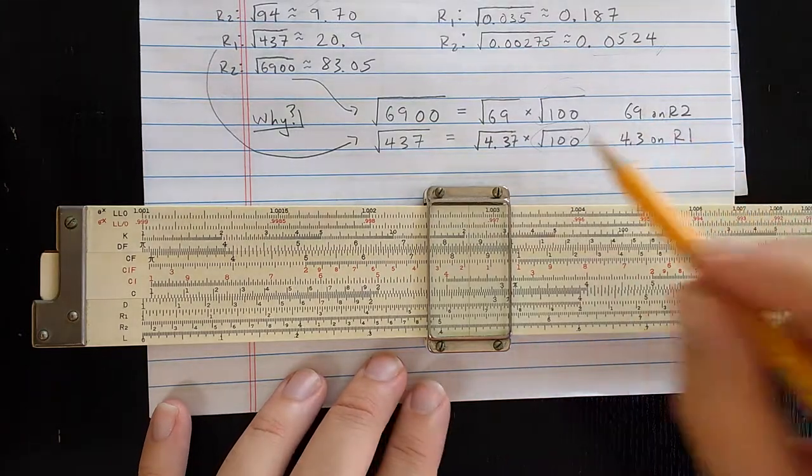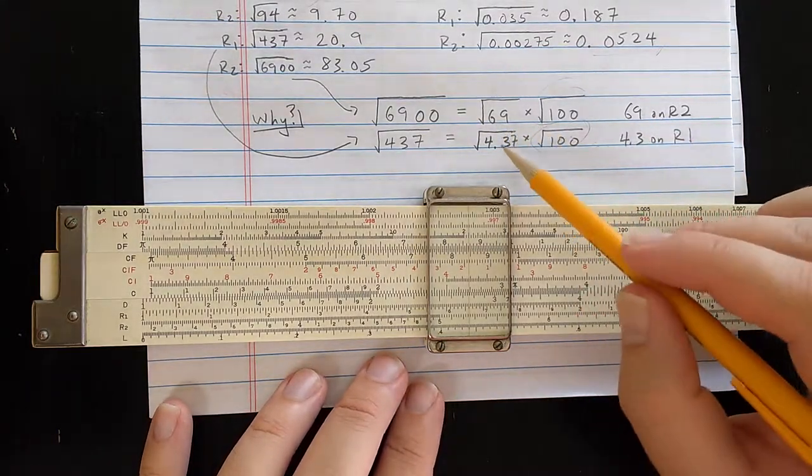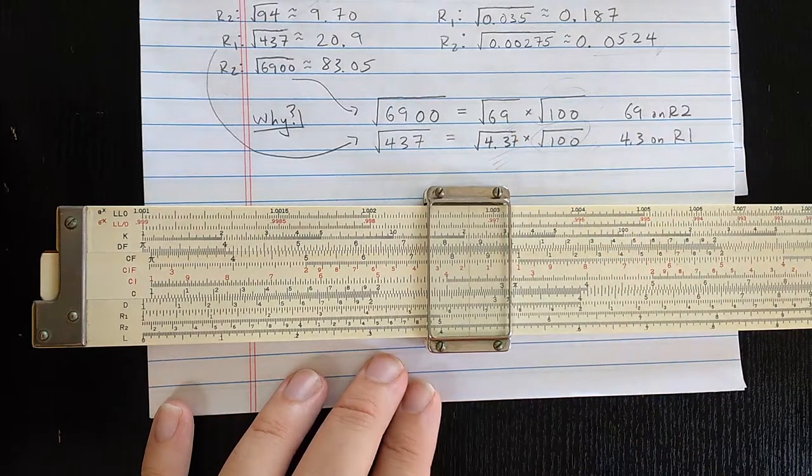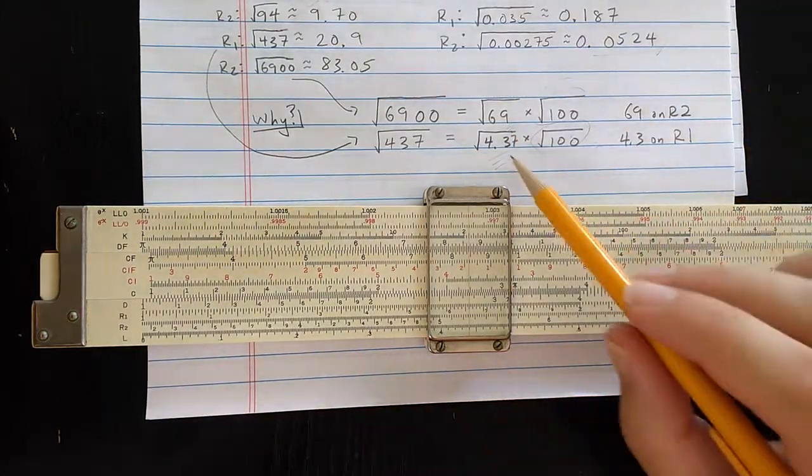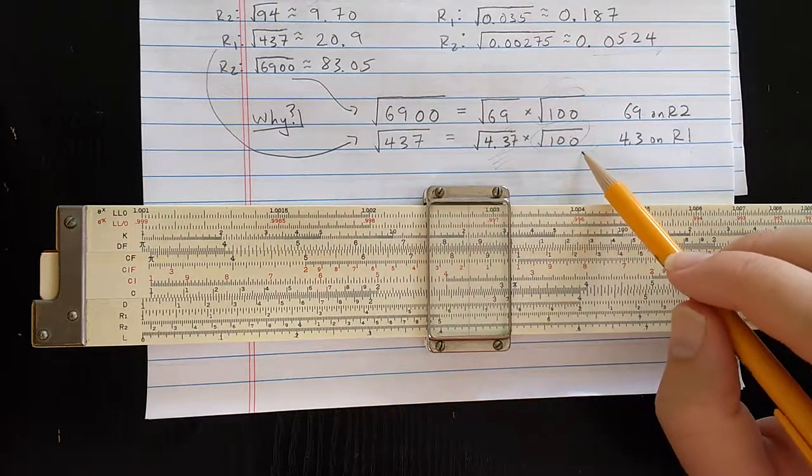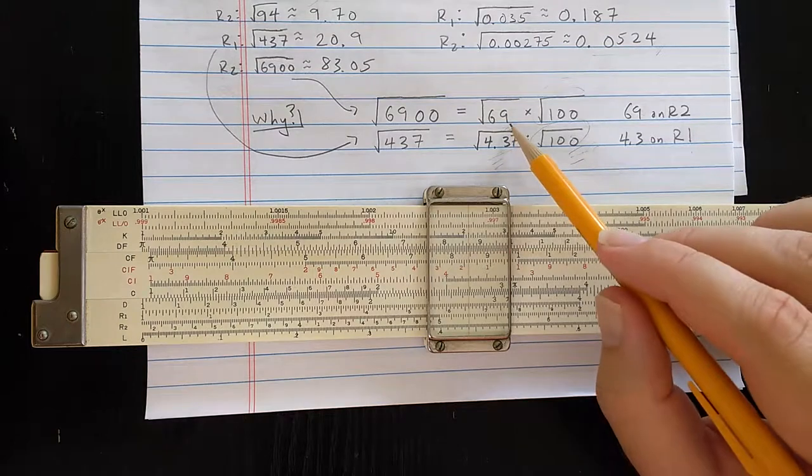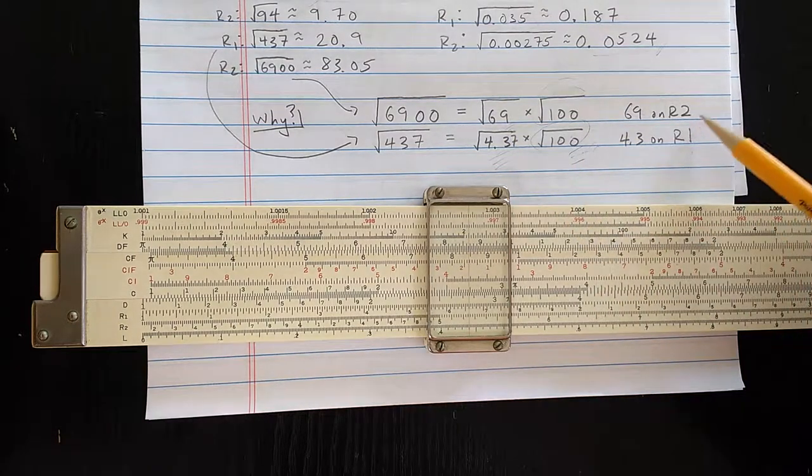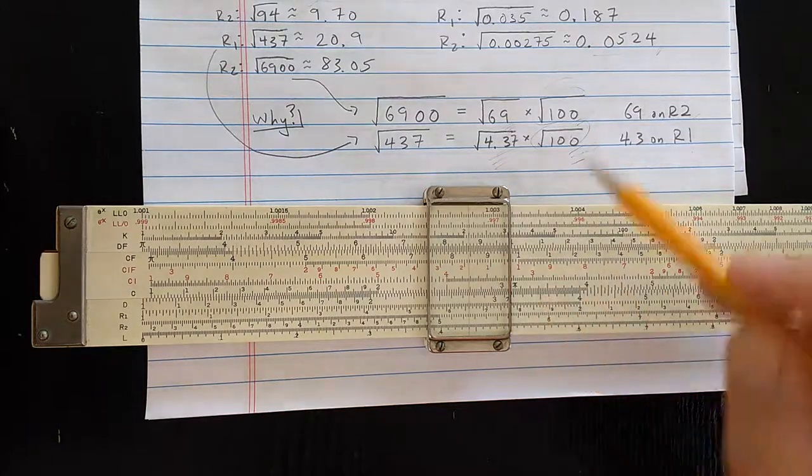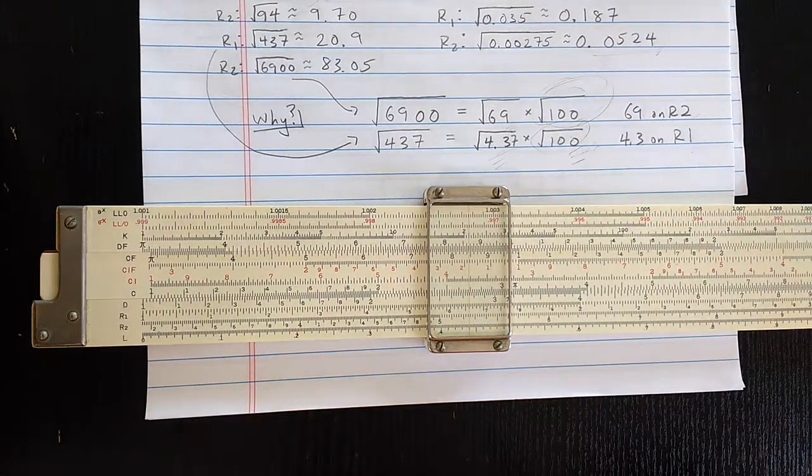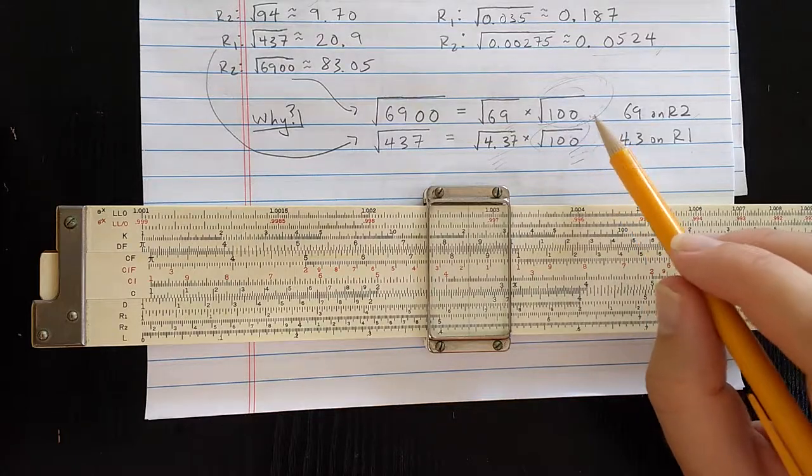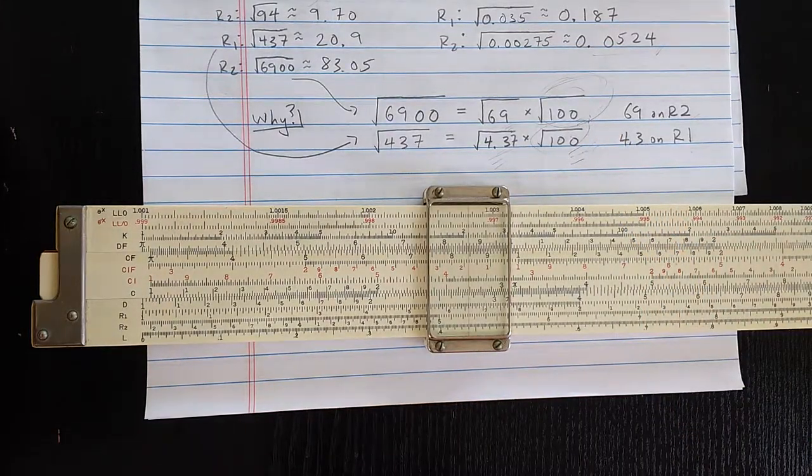What happens then is that you get two ranges, right? You get 1 to 10, and you get 10 to 100. And so the 1 to 10 numbers you're finding on R1, and then multiplying by that power of 10. And then the numbers from 10 to 100 you're finding on R2, and then multiplying by that power of 10. But you need to take the square root of that power of 10, and to do that cleanly, what you should do is get an even power of 10. Then you're just dividing the power of 10 by 2.